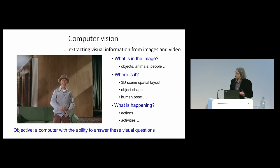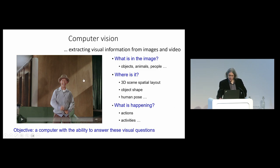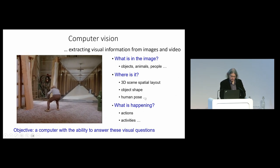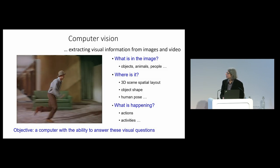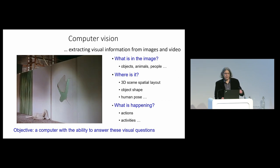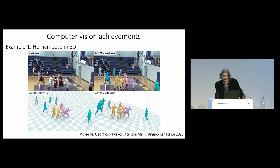So in this image here, we'd like to be able to answer questions like: what is in the image — the objects, in this case a person — where are the things in the image, meaning the spatial layout of the scene, the pose of the person, and then what is happening. This is a clip from Singing in the Rain. The objective is to be able to carry out tasks like this, answer these questions. The field has made quite some progress, and we can do quite a few things now, especially since the advent of deep learning — that's a decade ago.